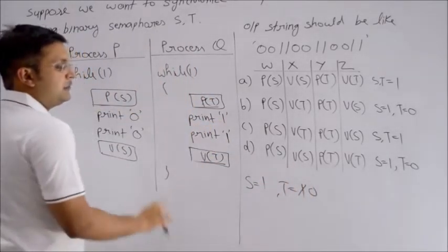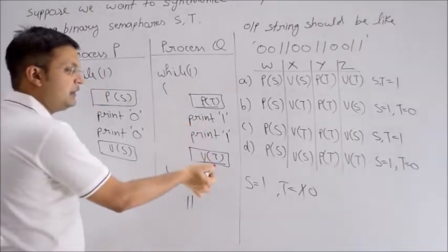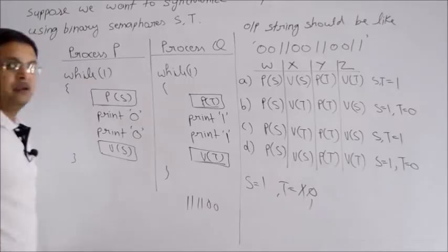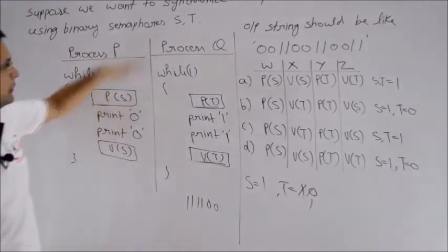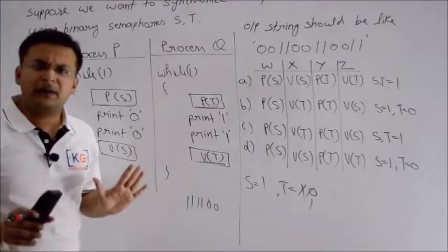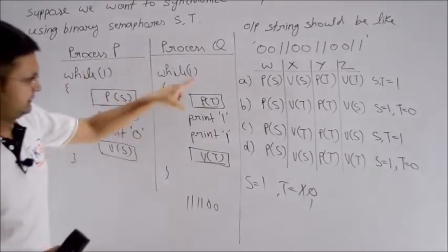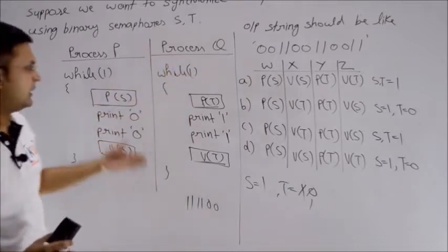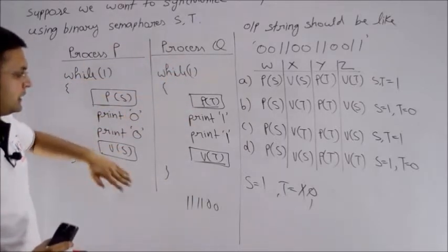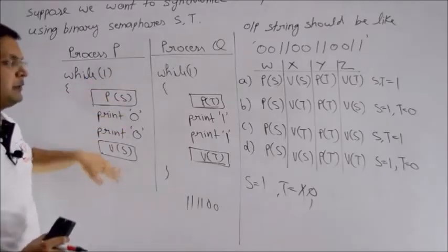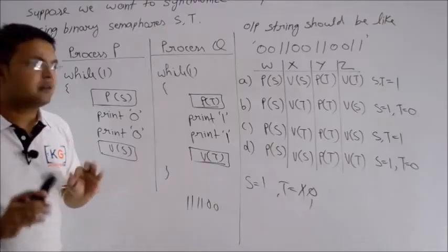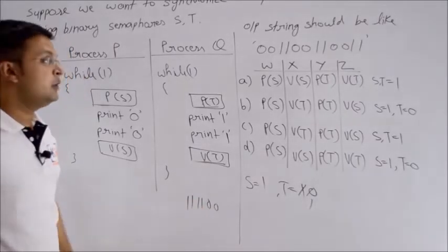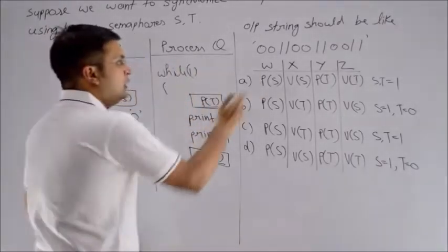If Q runs first, Q will print 1, but we need 0 first. Let me prove that option A is wrong. Can we make Q run first? To run process P, we need to execute P of T. We can do the wait operation if T's value is already 1. And T is initialized to 1, so we can do wait, making the value 0. Then we print 1 twice.